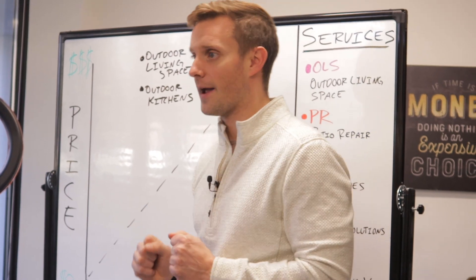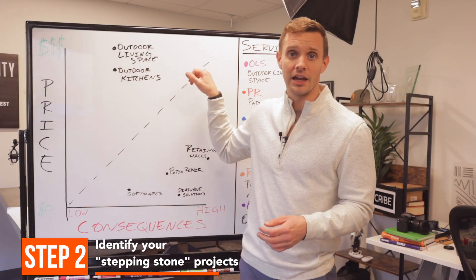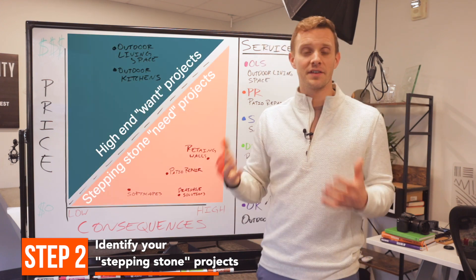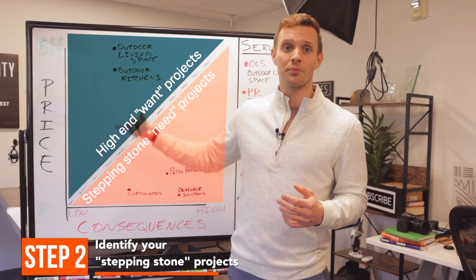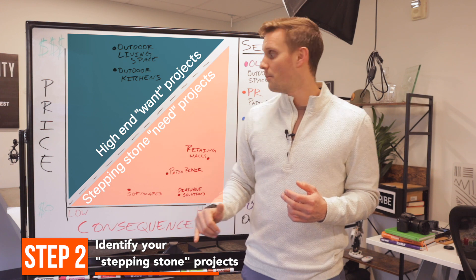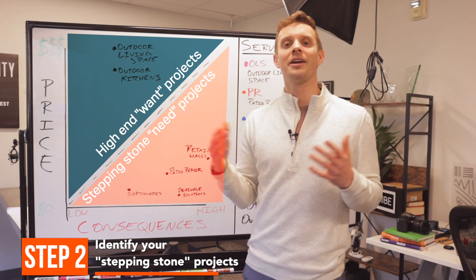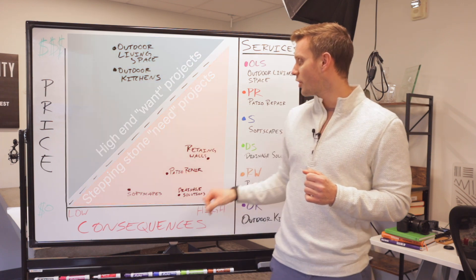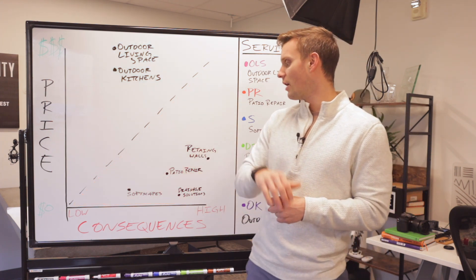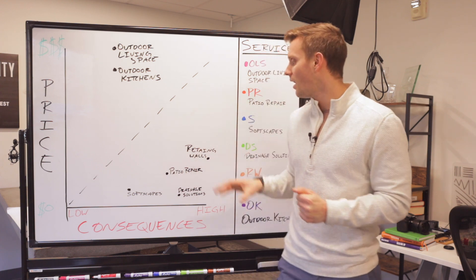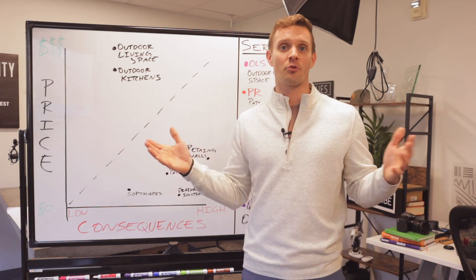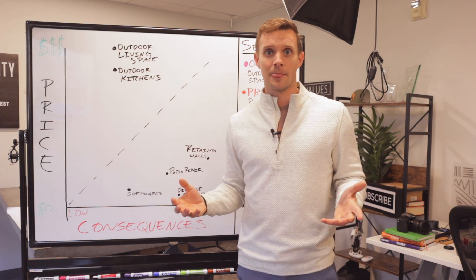So here's how it all breaks down. Essentially this dotted line here is anything below it, it's a little bit easier of a sell because not only is it lower price point, but it's also going to be higher consequences of not moving forward. The reason that we have these services, which is the retaining walls, the patio repair, drain solution, soft scapes, is a lot of these will naturally build into that outdoor backyard renovation living space.